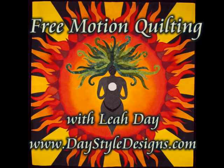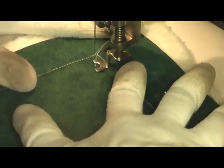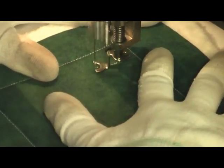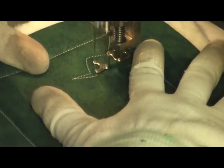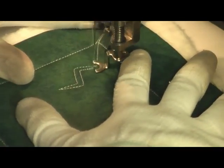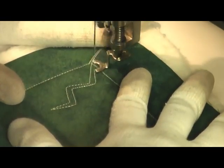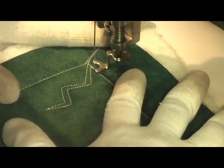This is the free motion quilting tutorial for Lightning Bolt. This works exactly like McTavishing in the sense that we're going to create four parallel lines of stitching meeting at a central point and then branching off with new motifs from that.